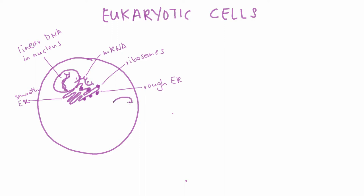Our protein will then be shipped to the Golgi apparatus for processing. Here, it is modified, decorated, and packaged up to ship to its final destination. For example, if it's a plasma membrane protein, this is where it will be shipped.